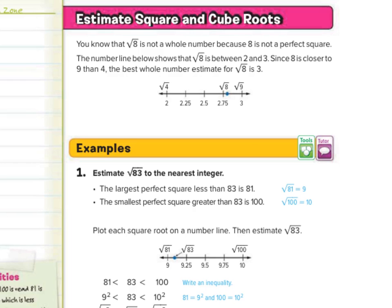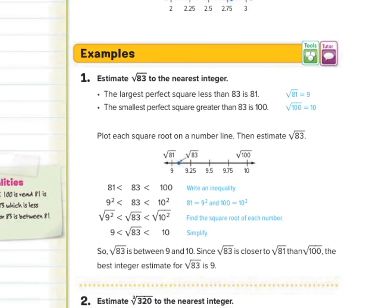In our guided examples, estimate the square root of 83 to the nearest integer. Well, think about the perfect squares around 83. You have 81, which is 9 squared, and the square root of 100 is 10. And sometimes a number line can be helpful here as we have 9 and 10, where 9 is the square root of 81 and 10 is the square root of 100. Where does the square root of 83 fall in? Well, a lot closer to the 9. So if we're using a nearest integer estimate, that's going to be 9.